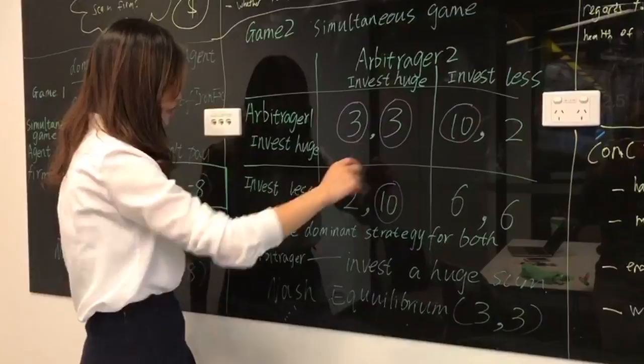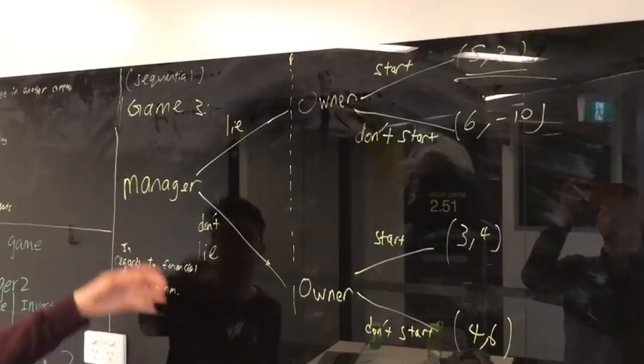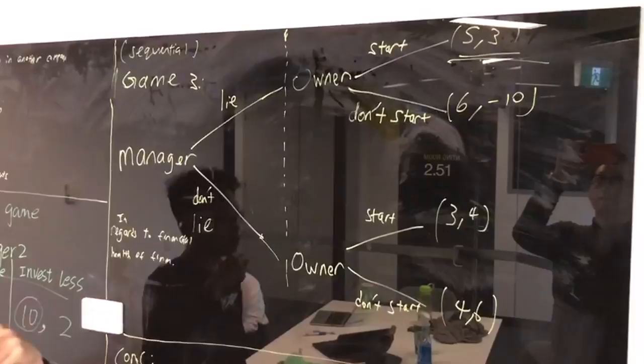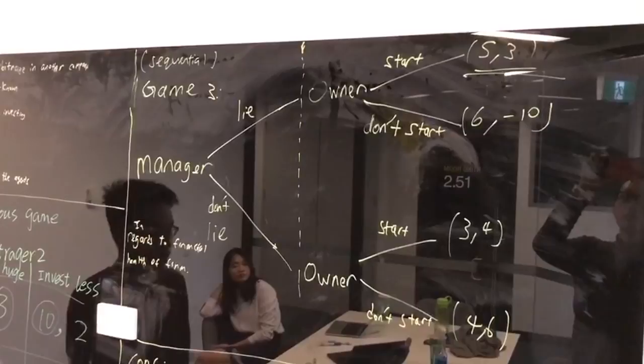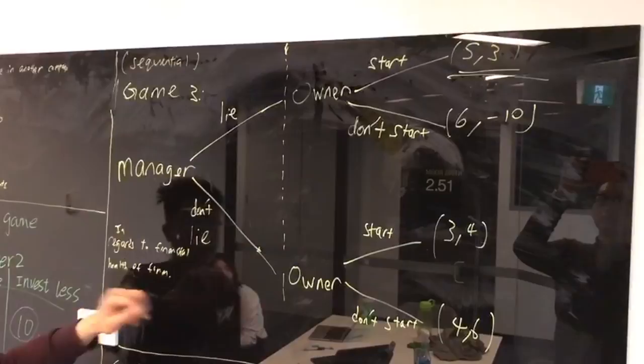In this game, the third game, it is a sequential move game. And it is after the arbitragers, the people who know how to make use and take advantage of the exchange market to make a profit, after they make use of this opportunity and make the firm, the INFX lose lots of money while they gain money instead. In this game, we have two players, the managers and the owners.